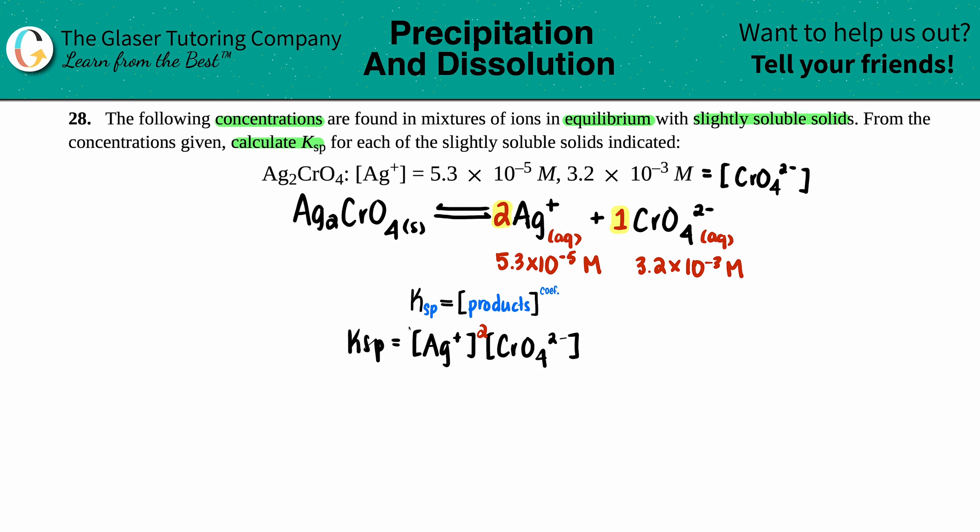Now we're just going to throw the numbers in. Literally throw them. 5.3 times 10 to the negative fifth for the silver, and then 3.2 times 10 to the negative third for the chromate. So let's see: Ksp equals, you have the two parentheses, 5.3 times 10 to the negative fifth, and that's squared, and then times it by 3.2 times 10 to the negative third.